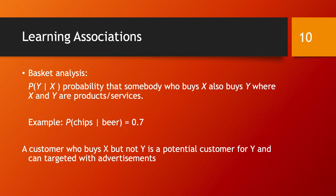It's really all about conditional probabilities. You would like to learn the probability of a behavior Y, given that you already know that behavior X happened. For example, maybe you would like to learn that the probability of chips being bought in the same shopping trip where beer was bought is 0.7 — so many people who buy beer will also buy chips.